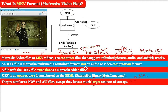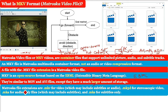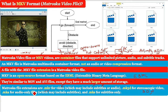Matroska file extensions are: .MKV for video, which may include subtitles or audio; .MK3D for stereoscopic video; .MKA for audio-only files, which may include subtitles; and .MKS for subtitles only.